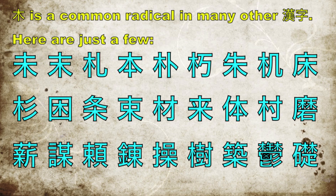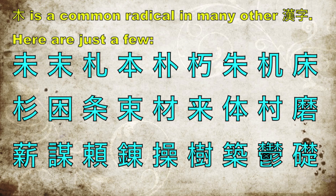Now this particular kanji, ki, or tree, is also a radical. If you look closely at this random group of kanji, you can see the kanji as a radical appearing as just one section within them. Look closely and see if you can find ki — sometimes appearing more than once — in this group of kanji.